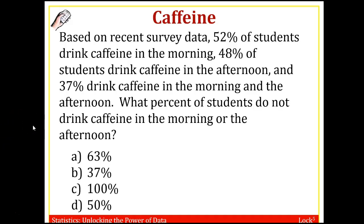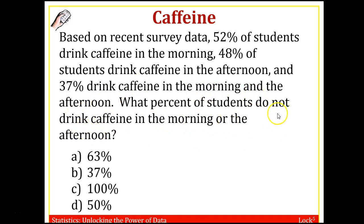I'm going to look at another example. We have some survey data where 52% of students say they drink coffee in the morning, 48% of the students drink caffeine in the afternoon, and 37% drink both in the morning and afternoon. What percent of students do not drink caffeine in the morning or in the afternoon? Think about the 'not': could you figure out the probability that students do drink caffeine in the morning or in the afternoon, and then use the complement rule?